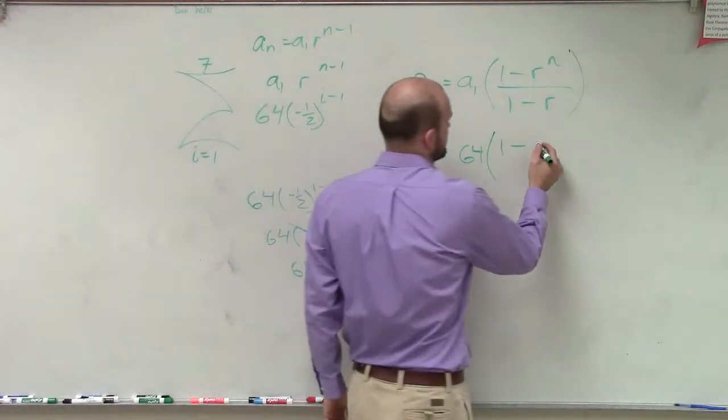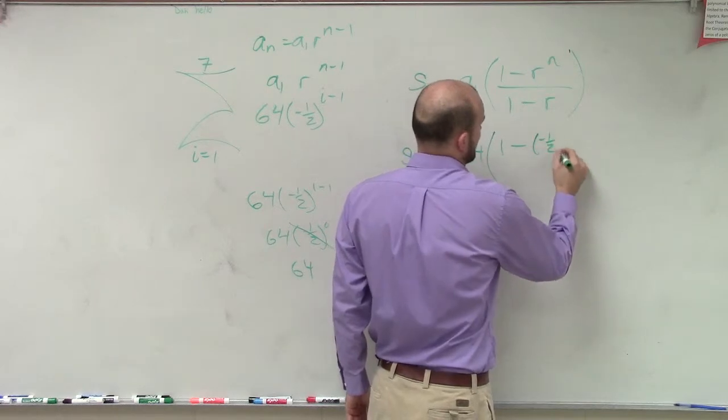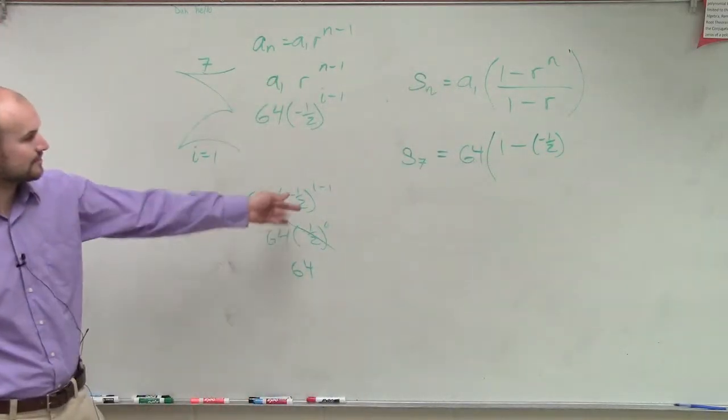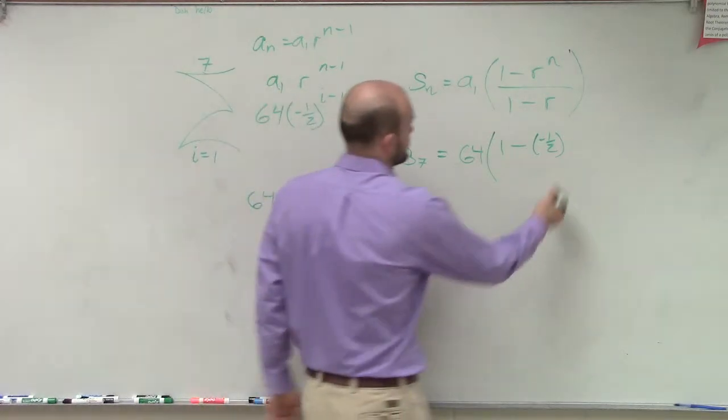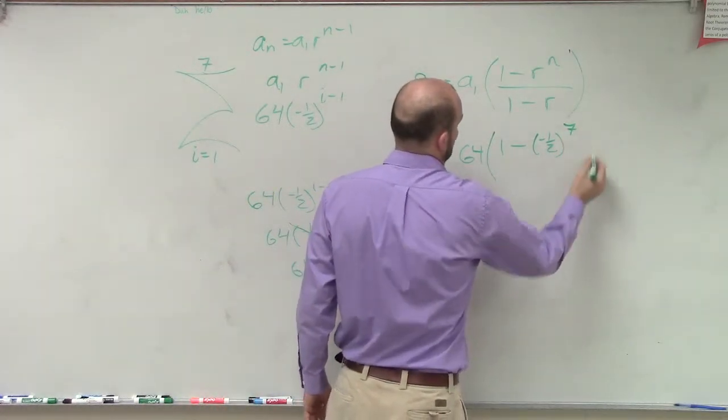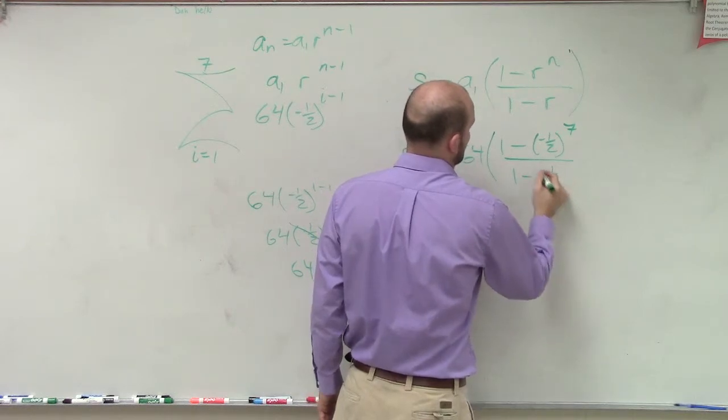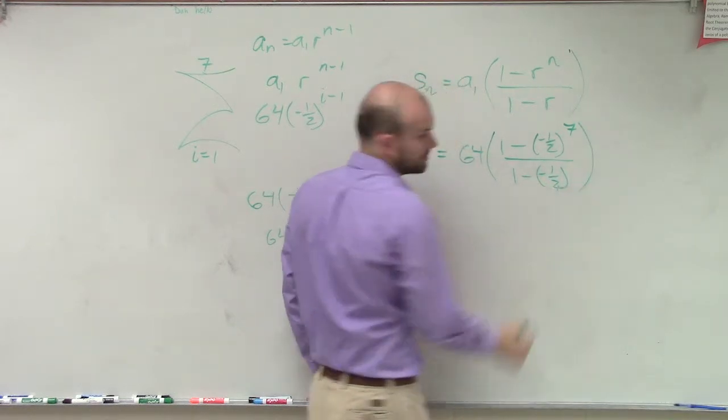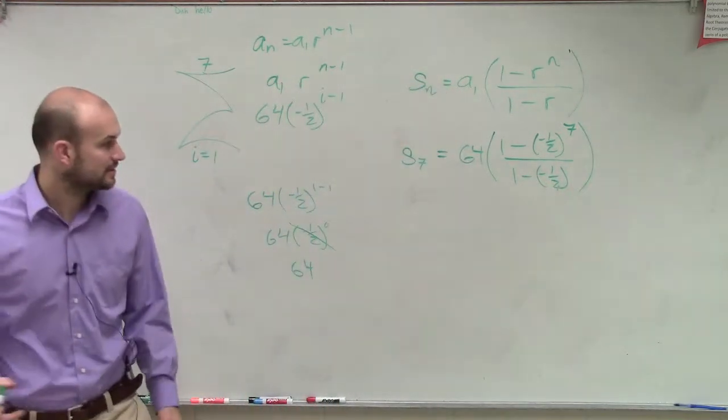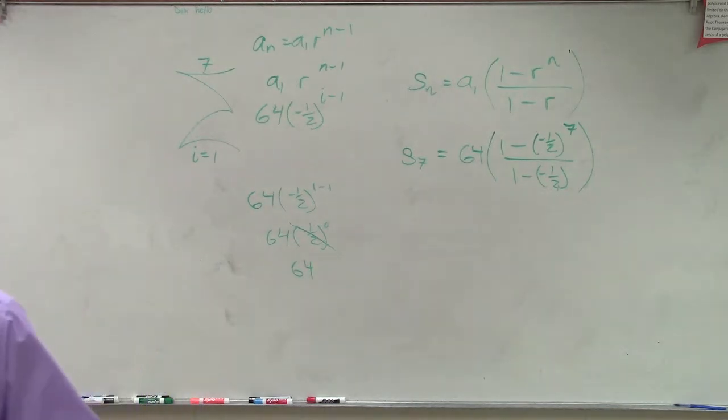So 1 minus negative 1 half, and then we're going to raise that to the seventh power, all over 1 minus negative 1 half. Now, I will need a calculator to work through on this.